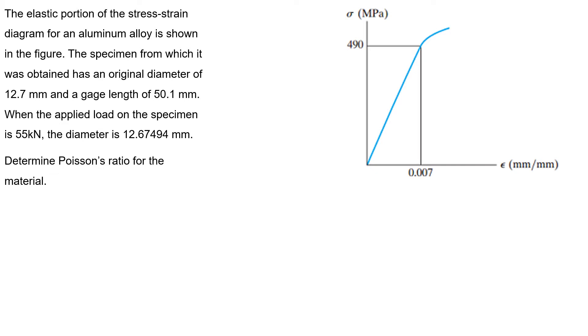So first we're gonna find our lateral strain, that is the change in diameter over the original diameter. So my strain equals 12.67494 minus 12.7 over the original length 12.7. So my strain equals minus 0.001973 mm over millimeters.